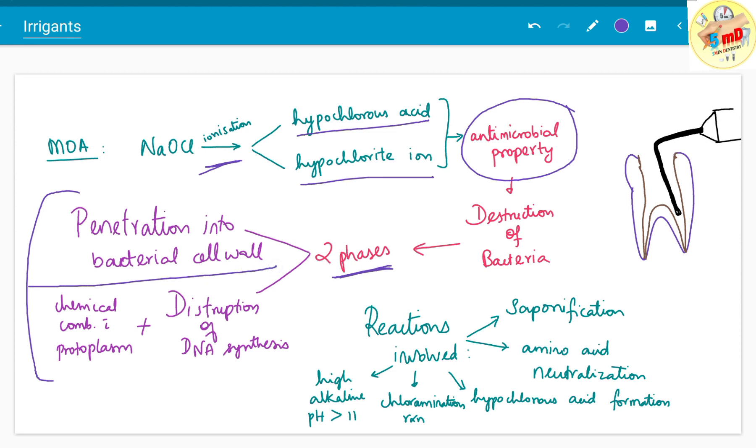The reactions involved include five processes: saponification reaction, amino acid neutralization, hypochlorous acid formation, chloramination reaction, and the high alkaline nature of this solution with pH greater than 11. All these five properties help in the antimicrobial action of sodium hypochlorite.